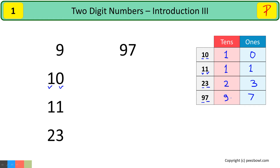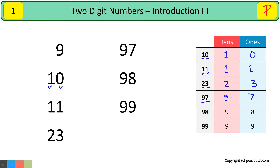After that, number 98 comes. 98 is also a two-digit number. After 98, 99 comes. 99 is also a two-digit number. As you can see, in 99, we have 9 at the ones place and 9 at the tens place as well.